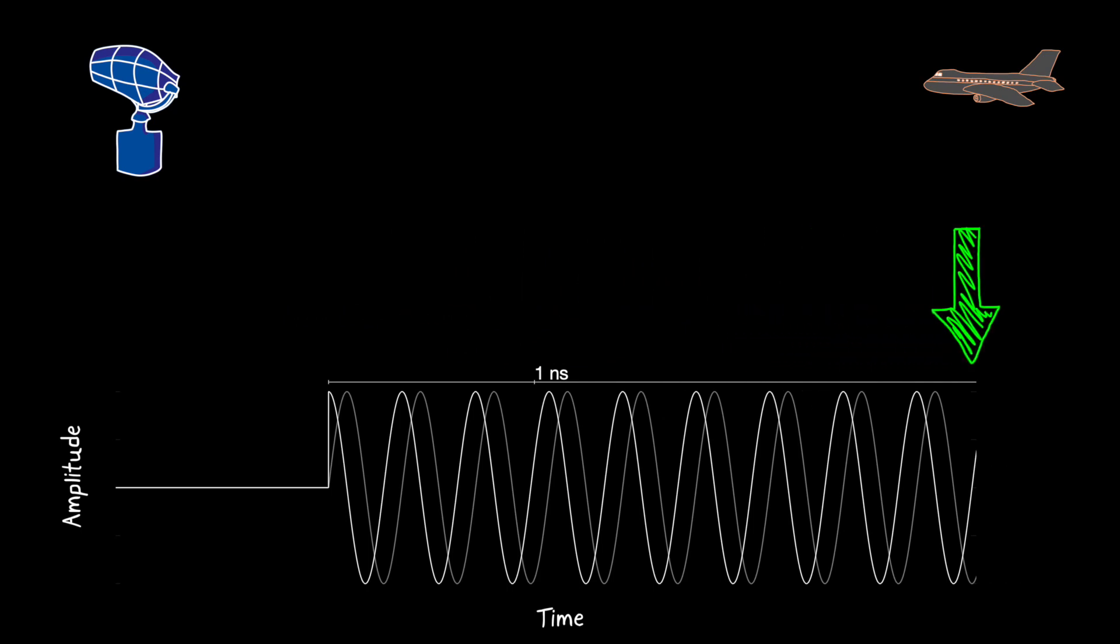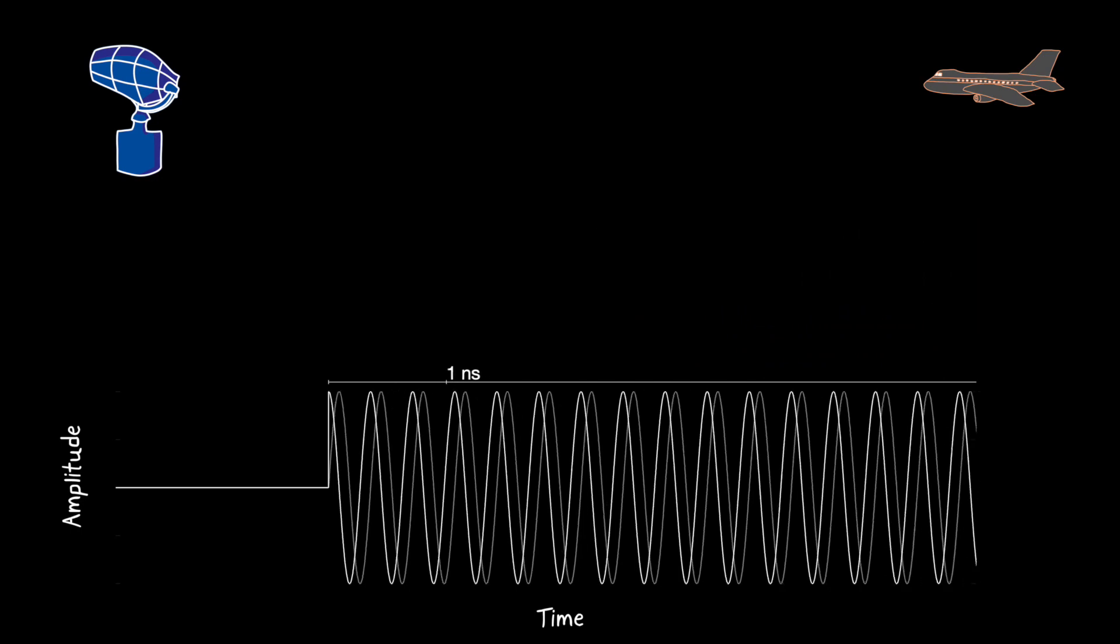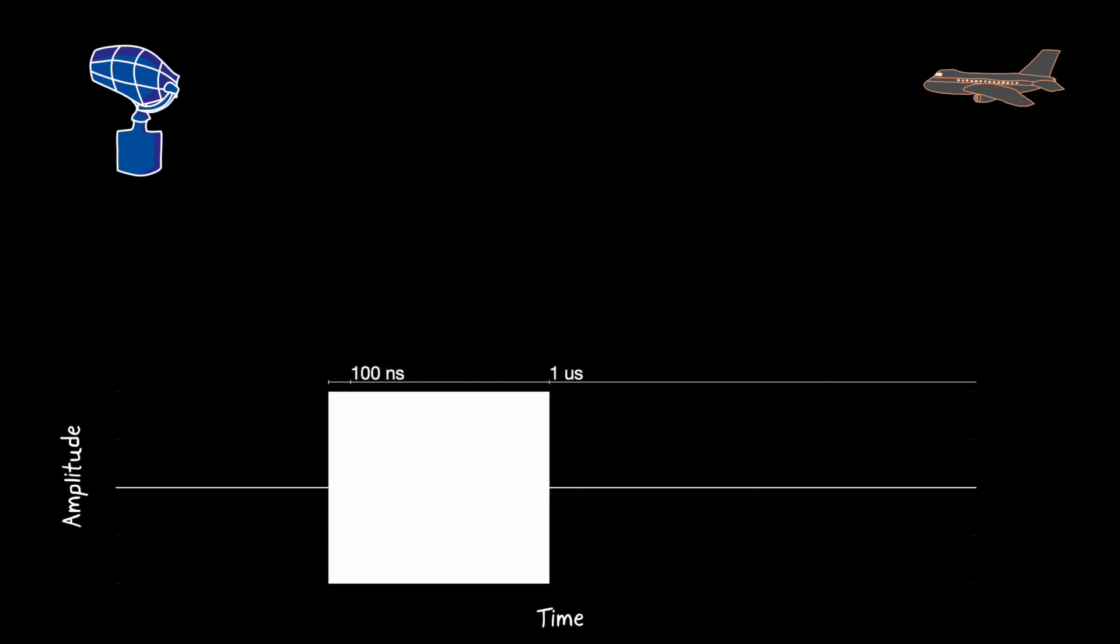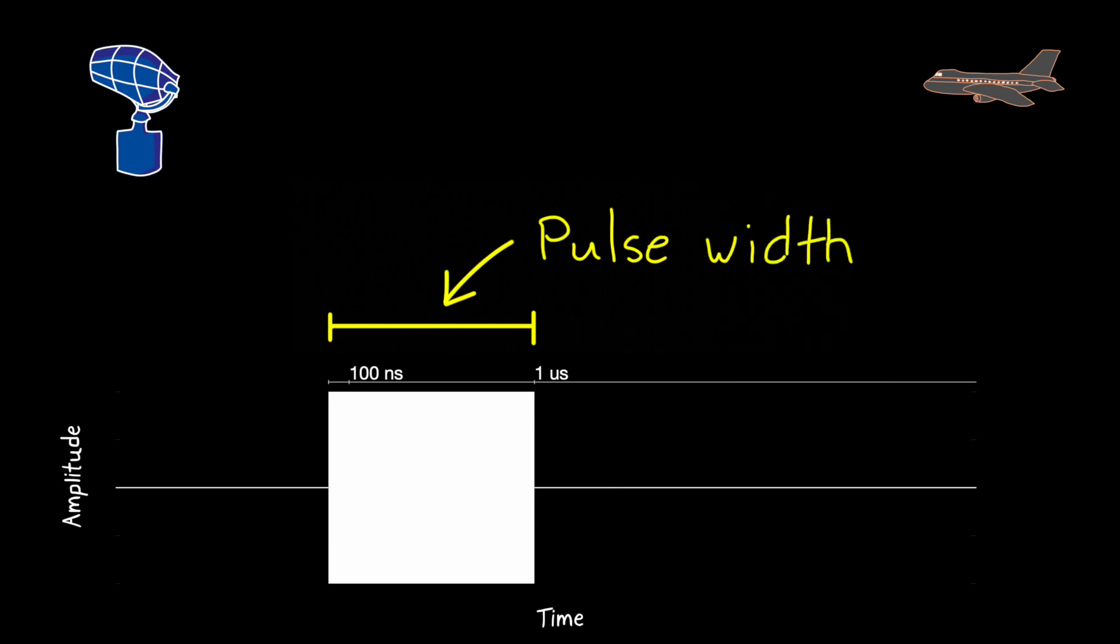During the pulse, a constant 2.8 GHz signal is being transmitted. The radar transmits for a certain amount of time, called the pulse width. In this example, I'm using a pulse width of 1 microsecond. Since the signal is oscillating 2,800 times within this pulse, it just looks like a solid block at this resolution.